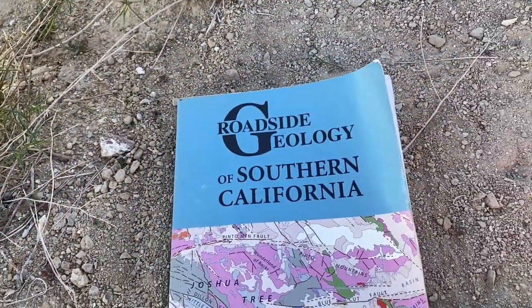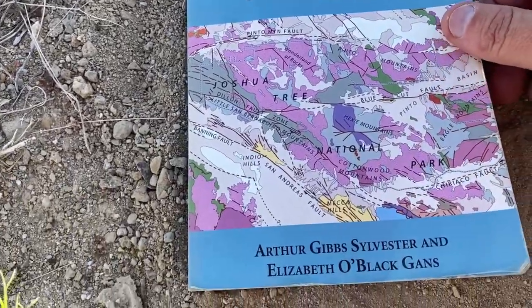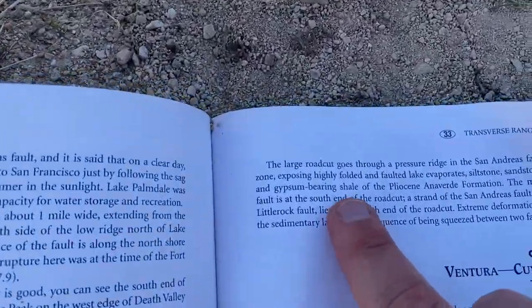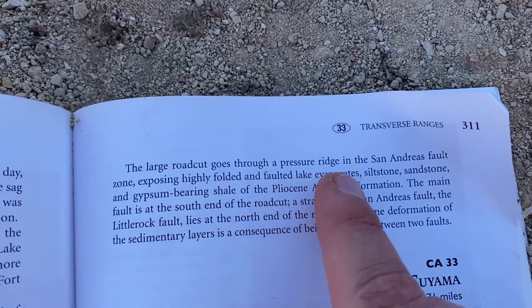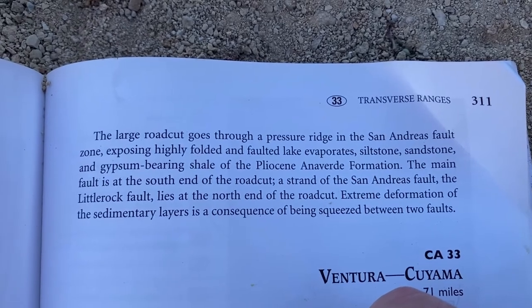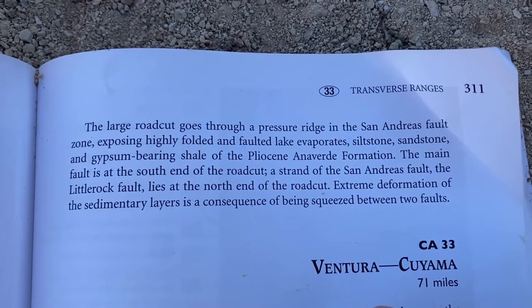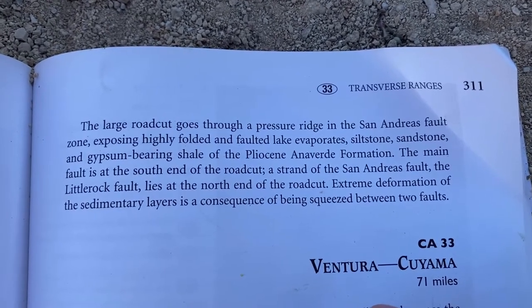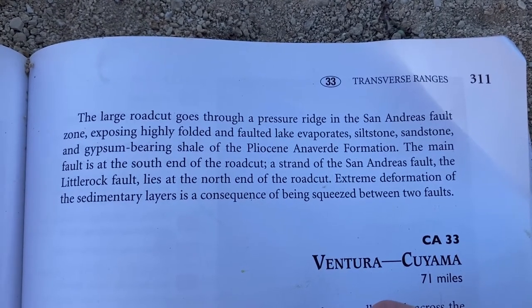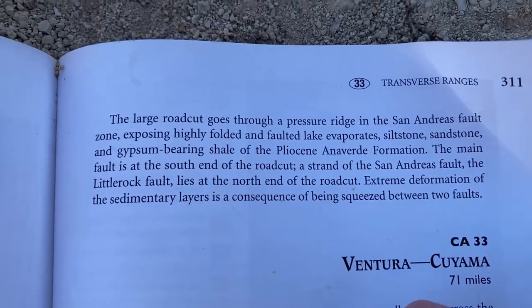We can fill in some details by reading this beautiful series — Roadside Geology of Southern California. On page 311 it says: 'The large road cut goes through a pressure ridge in the San Andreas fault zone, exposing highly folded and faulted lake evaporites, siltstone, sandstone, and gypsum-bearing shale of the Pliocene Verde Formation. The main fault is at the south end of the road cut, a strand of the San Andreas fault, and the Little Rock fault lies at the north end of the road cut. Extreme deformation of the sedimentary layers is a consequence of being squeezed between two faults.' I'll say!